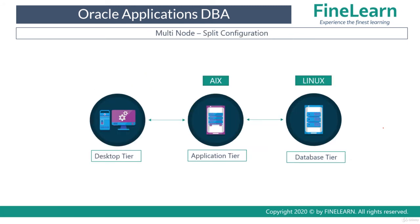There is one more configuration called split configuration. Usually you won't see this type of configuration in real time — there are very few customers who might still use the split configuration. Oracle recommends using it as a normal configuration where you'll have the same platform for both application and database tiers. In a split configuration, what we have is both the application tier and database tier not running the same operating system. For example, you can see that the application tier is using AIX platform operating system, whereas the database is running on a Linux platform. So this is called a split configuration.